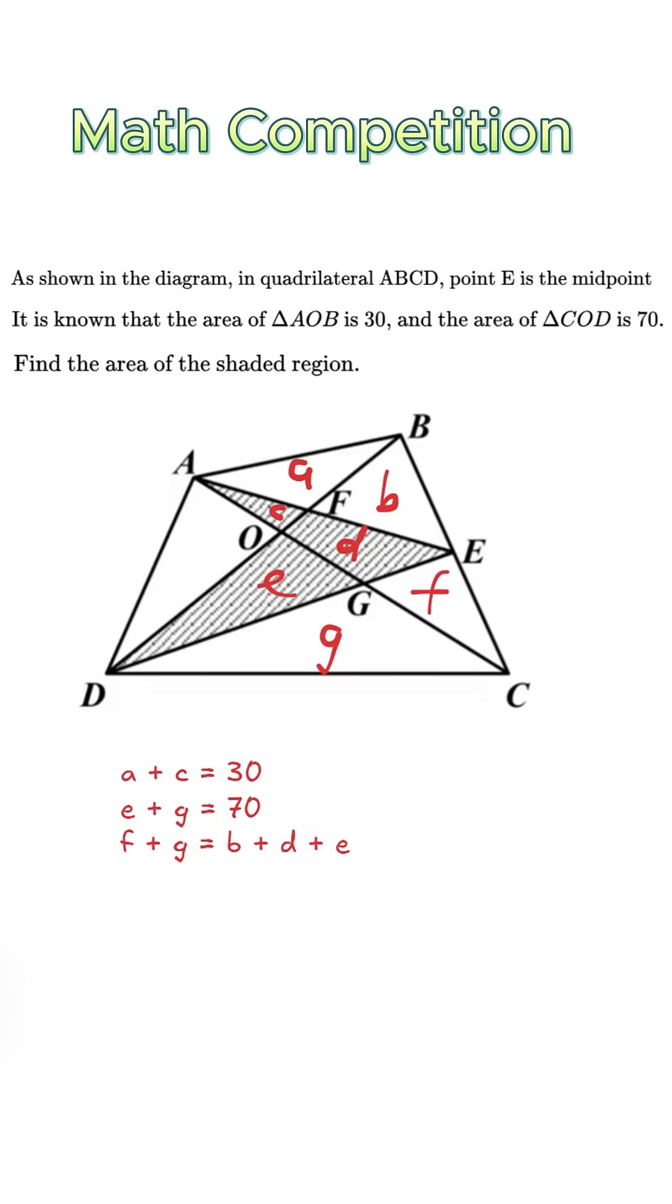Similarly, area of triangle BEA equals area of triangle CEA. So a plus b equals c plus d plus f.